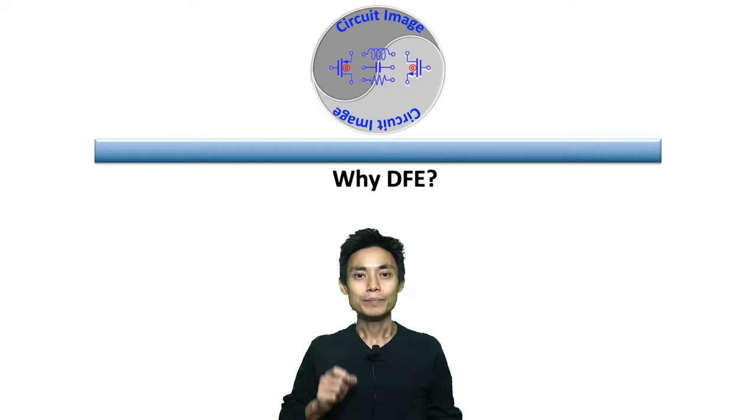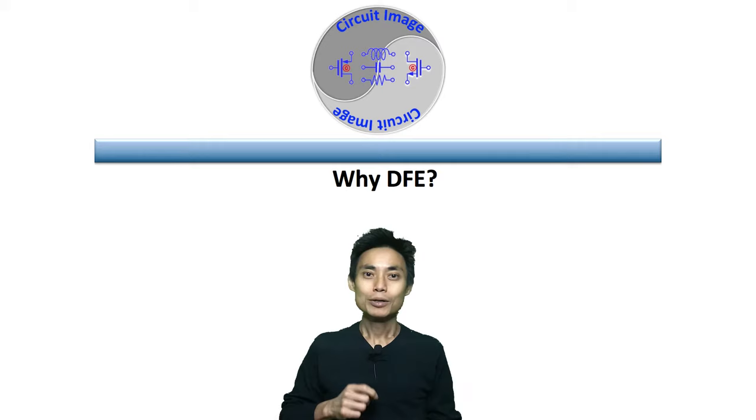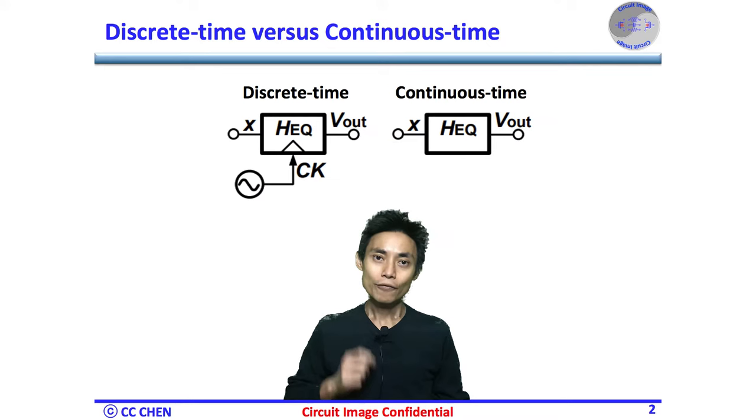Before why, what's the decision feedback equalizer? Perhaps we can start with the equalizer category of the DFE.